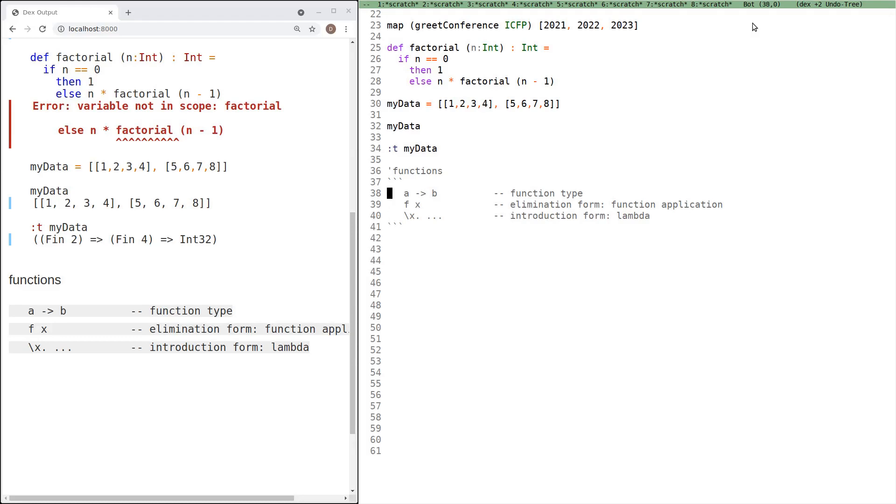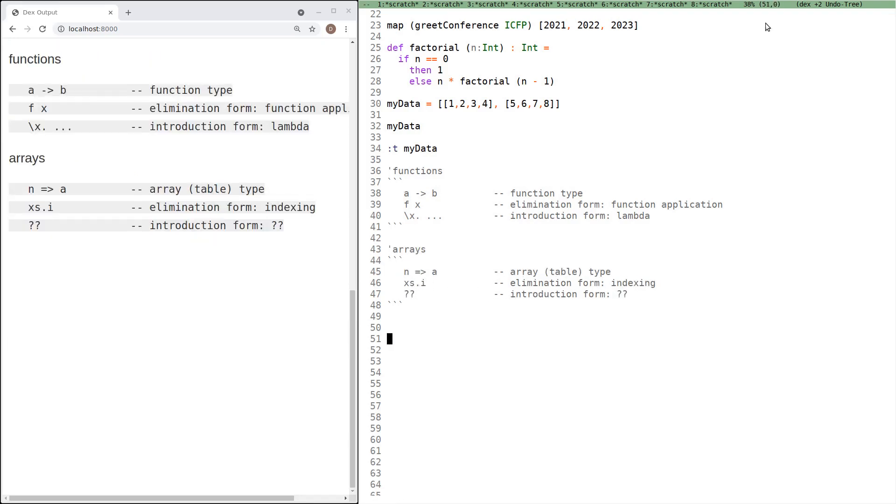So let's explore this analogy even further. So now let's take a closer look at functions, which is something we're very familiar with. One thing I've learned is that PL is a lot like quantum field theory, in that everything is described in terms of creation and annihilation operators, or introduction and elimination forms. And so for functions, we have the introduction form, which is Lambda, and we have the elimination form, which is function application, and we have the function type. And we can make the same sorts of things for arrays.